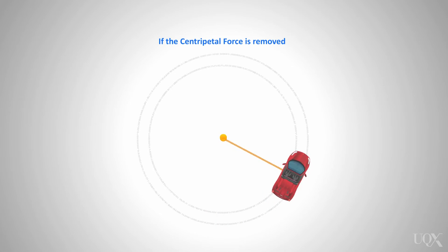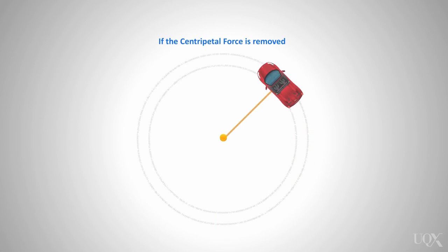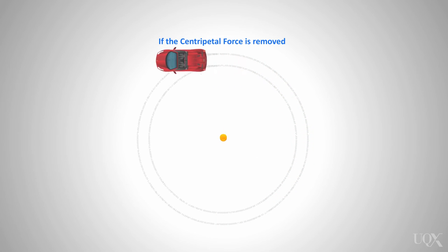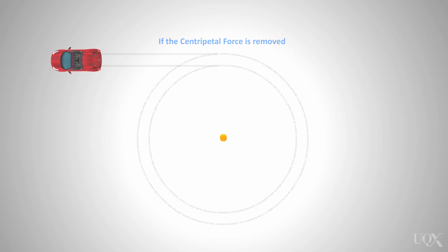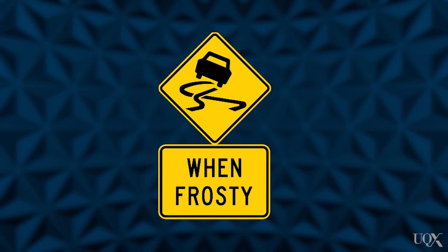If this force is suddenly removed, as happens if the string breaks when swinging an object in a circular path, the car will continue on its current direction. This is exactly what happens when a car turning a bend encounters an oil spill or ice on the road. The friction between the tyres and the road is suddenly reduced, with a significant reduction in the centripetal force.